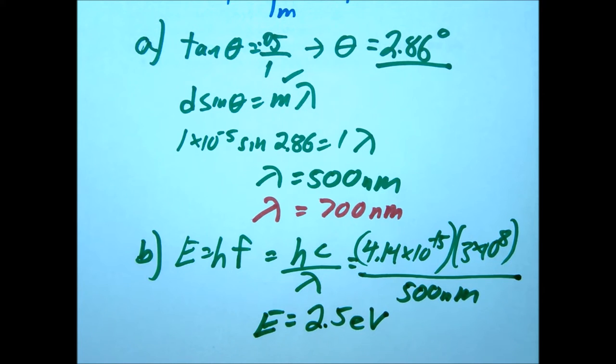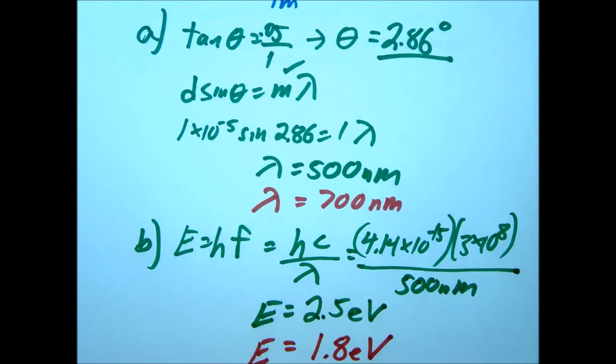Repeat that for red. For red, you should get an energy of 1.8 electron volts. Always make sure your answers make sense. Green is higher energy than red, so our answers look like they're on the right track.